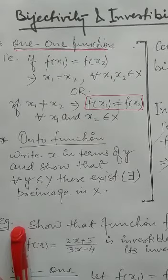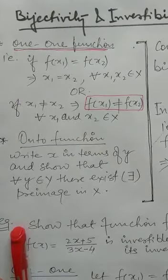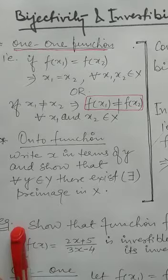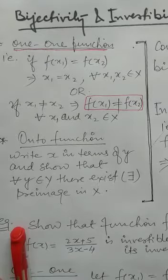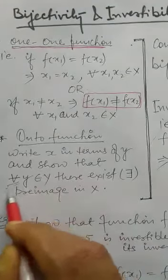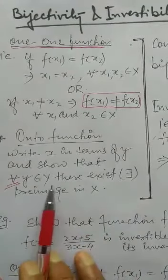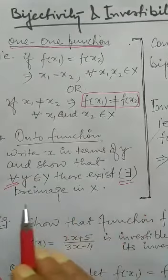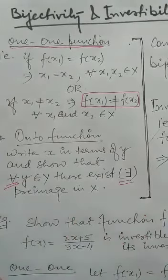In order to prove a function is onto, what we do is write x in terms of y from the given f(x), which is supposed to equal y. Then we show analytically that for all y belonging to set Y — using the universal quantifier — there exists a pre-image in set X, using the existential quantifier.